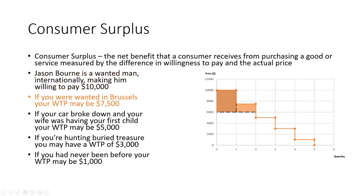If we keep moving out — you're wanted in Brussels — your willingness to pay is $7,500 and you can get a ride for $6,000. So your consumer surplus would be $1,500.